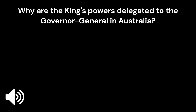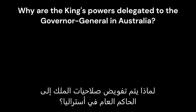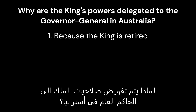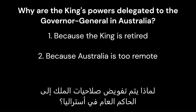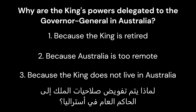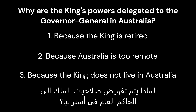Why are the King's powers delegated to the Governor-General in Australia? The correct answer is 3. Because the King does not live in Australia.